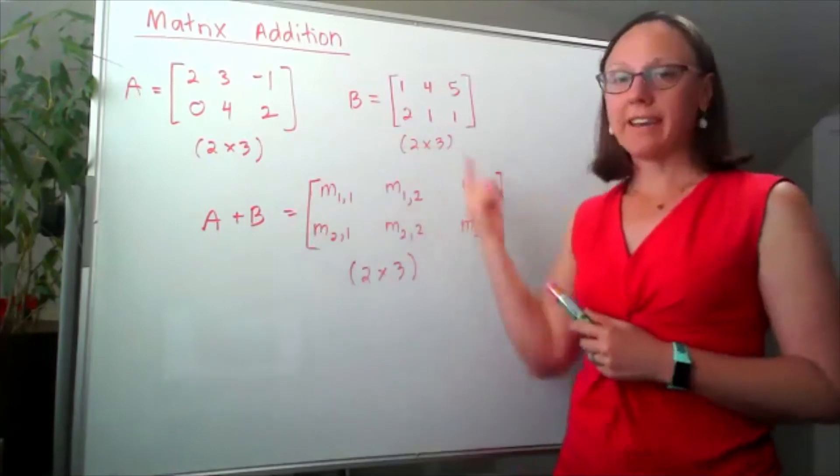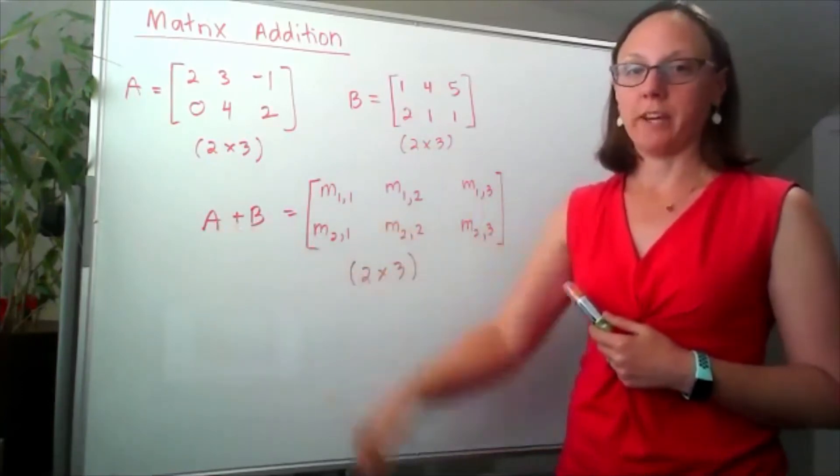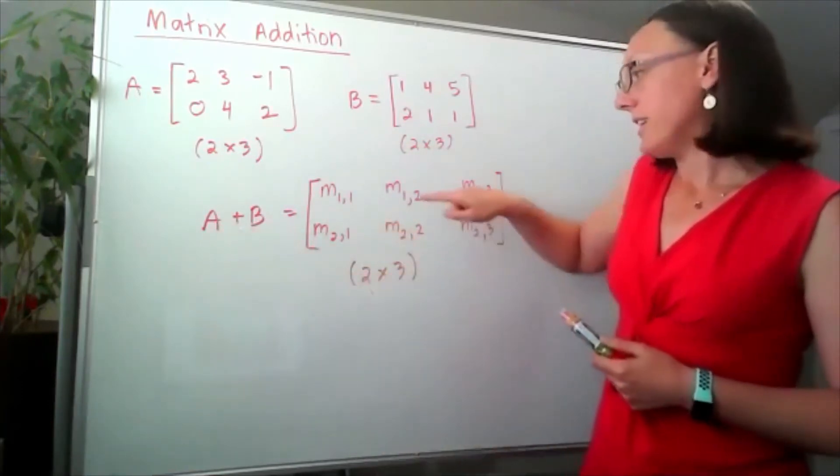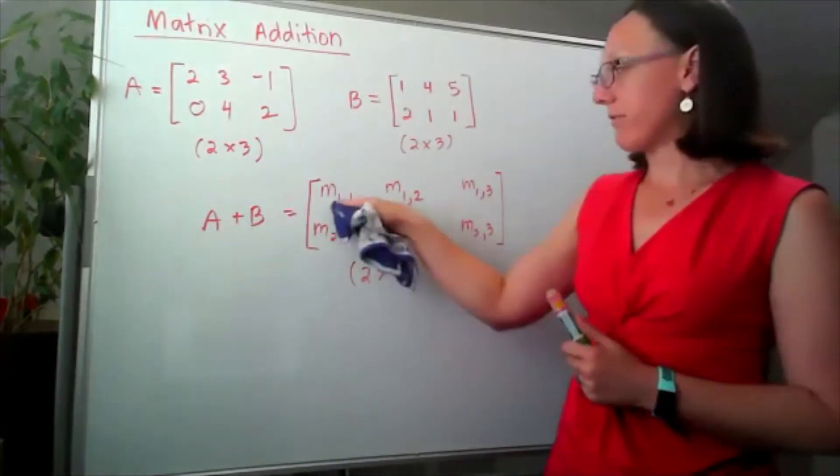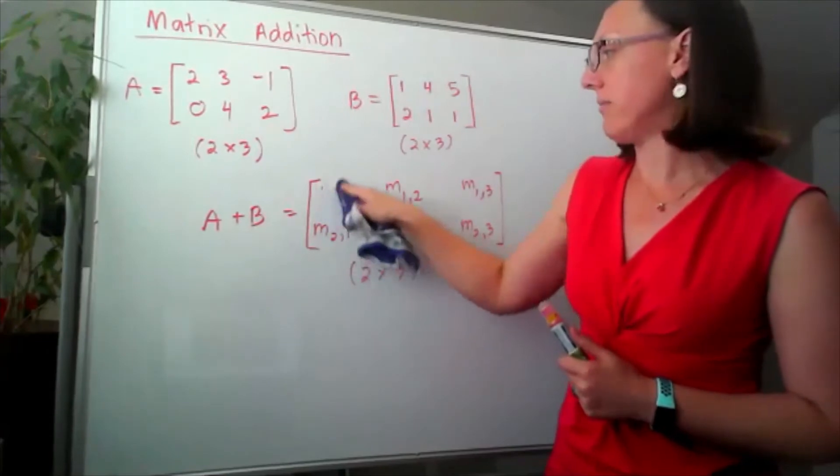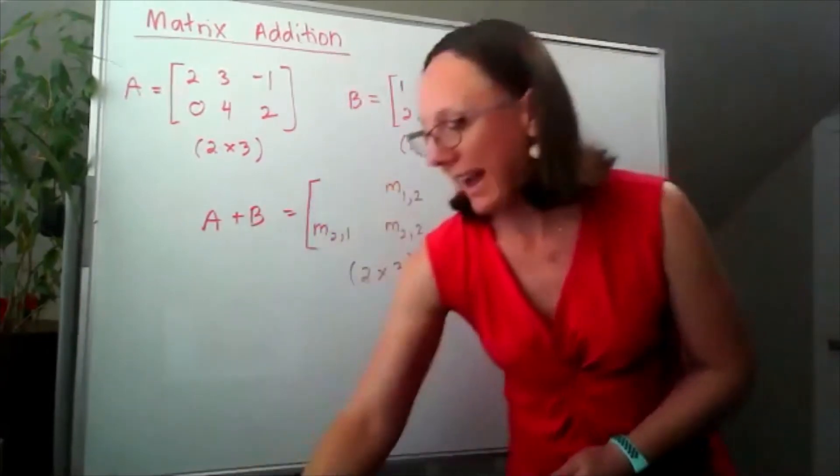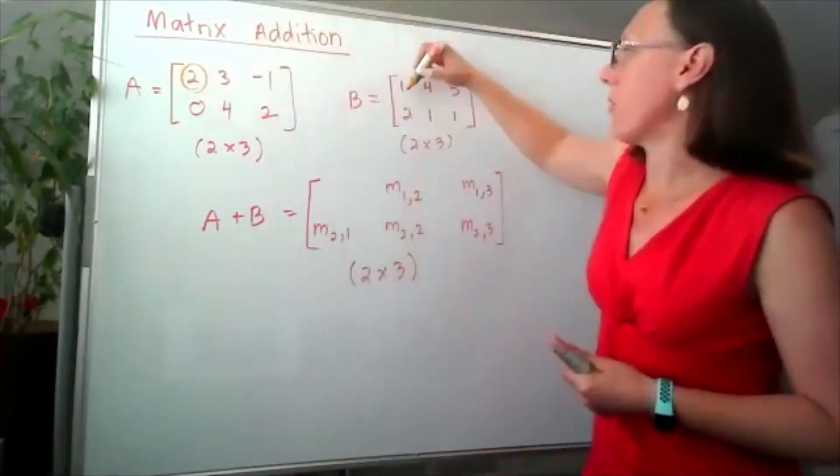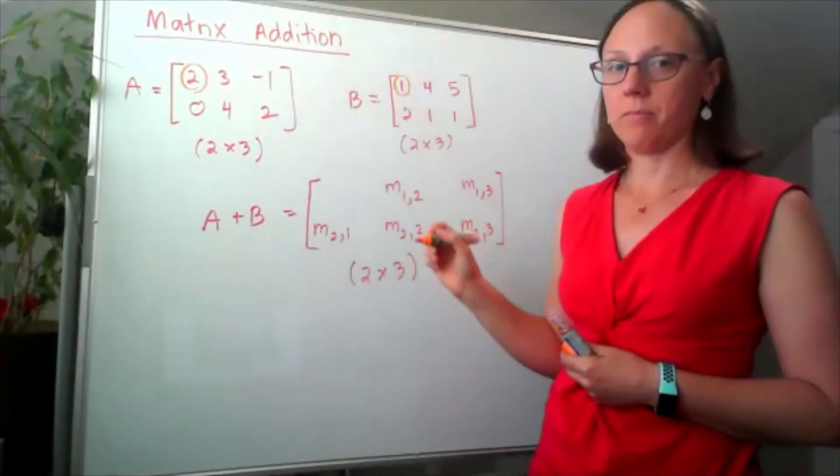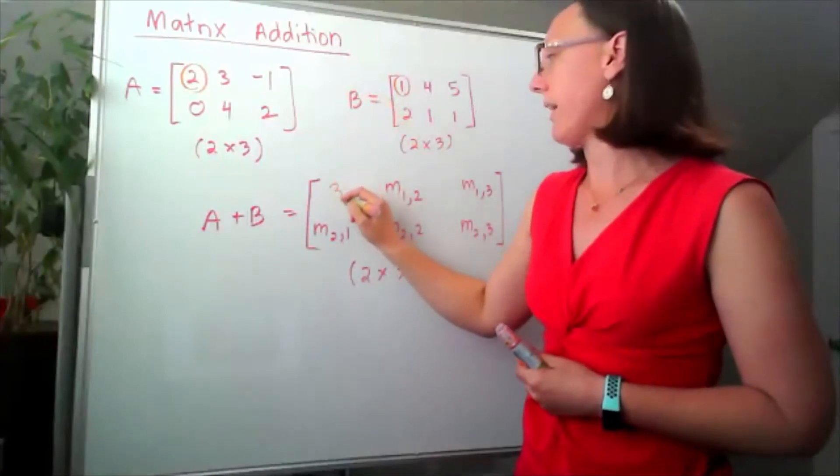The way that I get the entries for this matrix when we're doing matrix addition, to get this piece right here for the first row, first column, I'm going to add the entries from our two matrices that are in the first row, first column. So, two plus one, I get three.